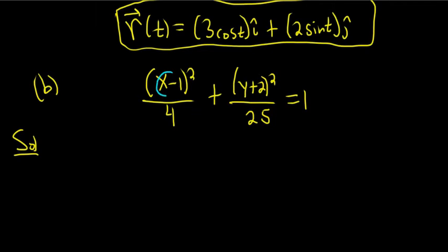So as before, we can use the same technique, right? We want this whole piece here, x minus 1, to be equal to 2 cosine t, right? Because when you square it, it'll go away. You'll get cosine squared. And we want this piece here to be equal to 5 sine t, right? Because when you square it, the 25 will go away, and you'll get sine squared.